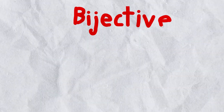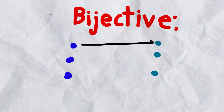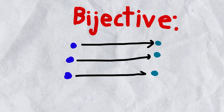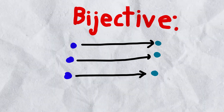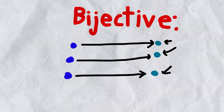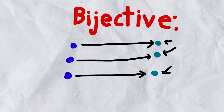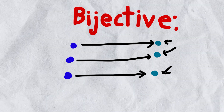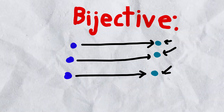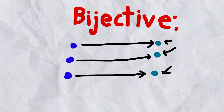And to cap off our recap, a function is bijective if every element in the domain gets a unique special snowflake element in the range, and every element in the range gets hit. So there's no stragglers — no standouts that don't get mapped to. Every element in the range gets mapped to by an element in the domain, and every element in the domain gets a special snowflake element in the range.